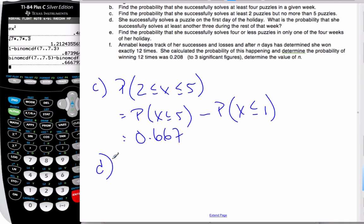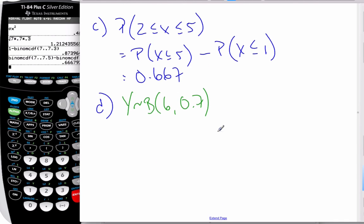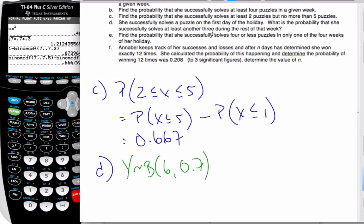D. She successfully solves a problem the first day of the holiday. This happened already. What is the probability that she solves at least another three during the rest of that week? Well, during the rest of the week means we have six days. So we have a new distribution. I'm going to call this Y. And it's still binomial. But N is now six. The probability is still 0.7 success. And so what I want to do then is find this problem. I want to find out that she solves at least another three. I want to find the probability that Y is bigger than or equal to three. Well, that's the same thing as saying one minus the probability of Y is less than or equal to two.